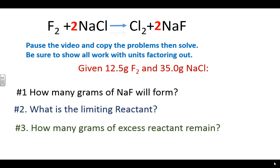Here is a practice opportunity for you. Do the stoichiometry to figure out the limiting reactant, how many grams of product will form, and how many grams of excess are left over — just like in the examples. Pause the video and copy down this equation. You'll be starting with 12.5 grams of fluorine and 35 grams of sodium chloride — two different reactant amounts, which tells you it's a limiting reactant problem. Try the problem, then start the video in a minute and the answers will be displayed. If you're not getting the right answers, go back and look at the example or bring your work to your teacher.